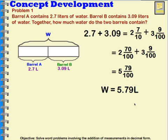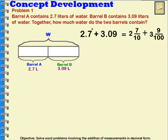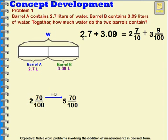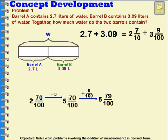Now this is one way I could have solved it, but I want to show you another way. I'm still adding 2 and 7 tenths and 3 and 9 hundredths together, and I'm still thinking about them as fractions. I'm going to start with 2 and 70 hundredths. Now I need to add 3 — so 2 and 70 hundredths plus 3 ones would be 5 and 70 hundredths. Now I just need to add my 9 hundredths to that, and I get 5 and 79 hundredths. This shows me that my total amount of water is 5 and 79 hundredths liters.